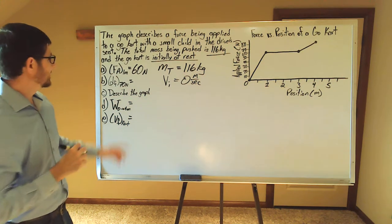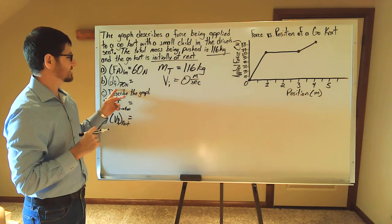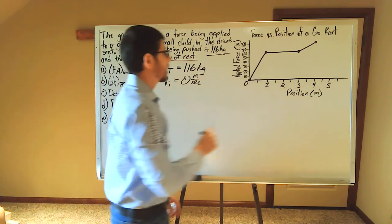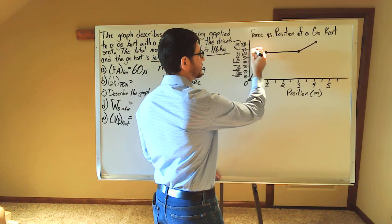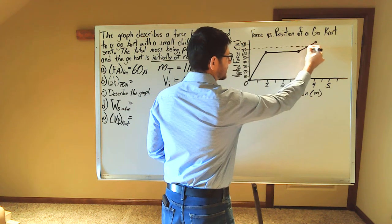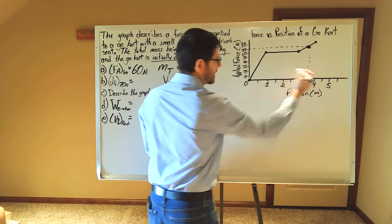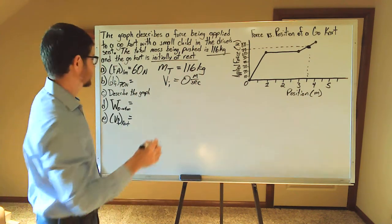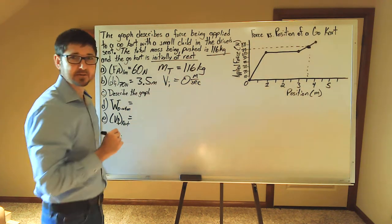Part B wants to know what the position is at a force of 70 newtons. Locating 70 newtons on the y-axis, you can see that we are at a position of 3.5 meters.